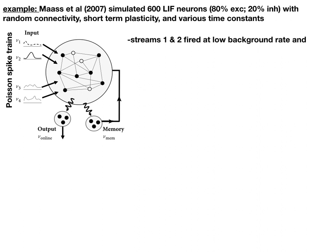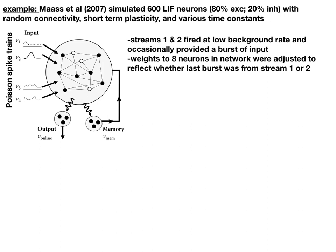So the idea is that these streams, say streams one and two, new one and new two are Poisson spike trains. Most of the time they have some low background firing rate, and occasionally they have some high firing rate. And what Maass et al. did is they really just trained the weights to eight neurons in the network, originated from eight neurons in the network, to reflect in that output whether the last burst came from stream one, so whether new one has been higher sooner, or whether new two was higher sooner.